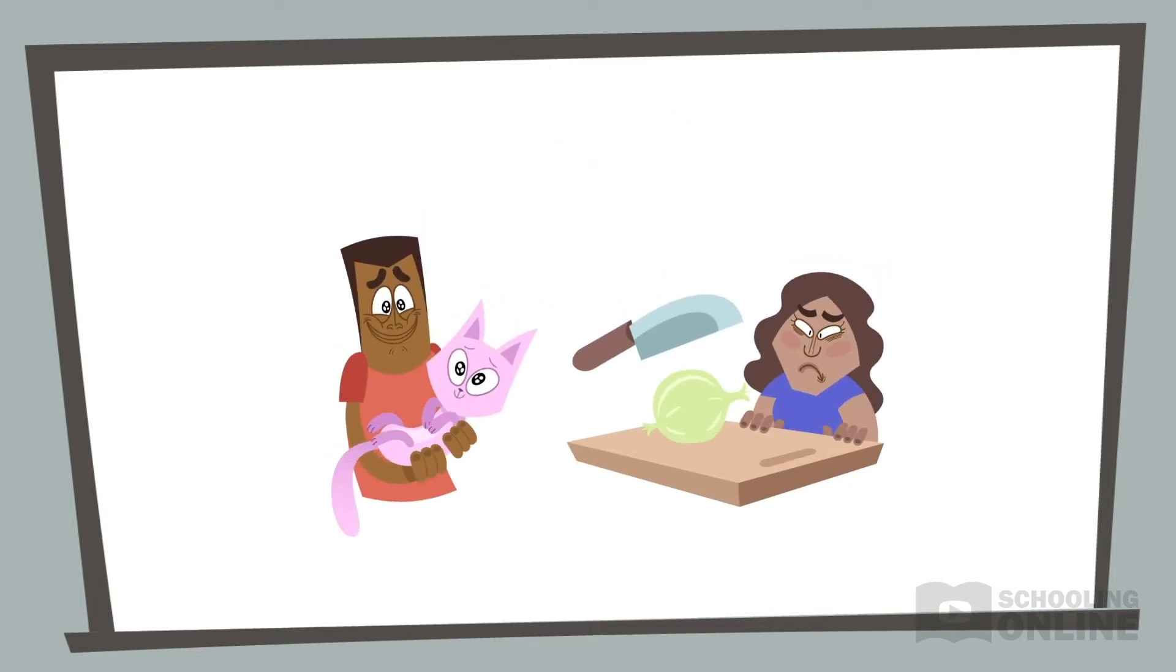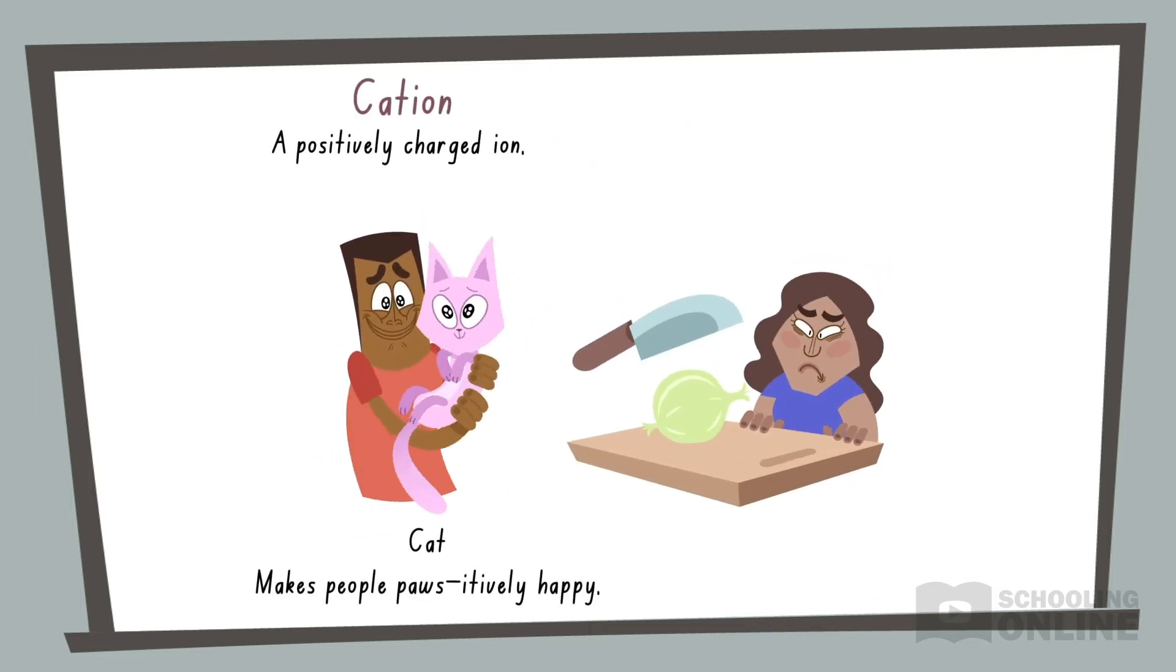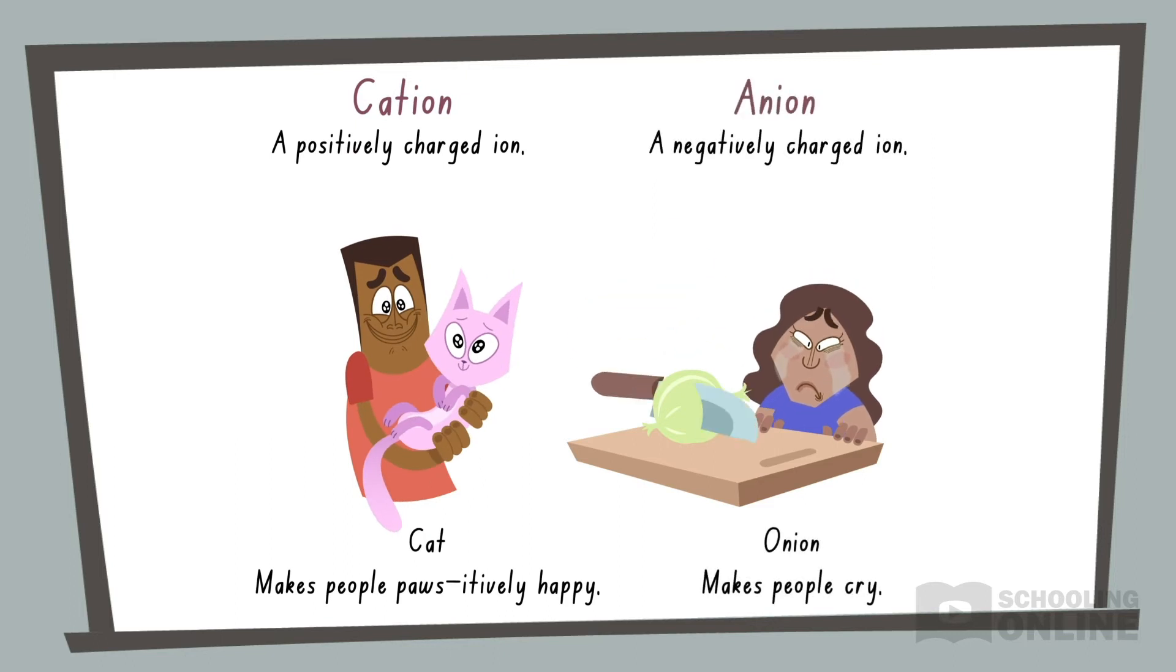If you recall from previous lessons, a cation is a positively charged ion, while an anion is negatively charged. This is true regardless of whether the ion is made from one atom or multiple atoms.